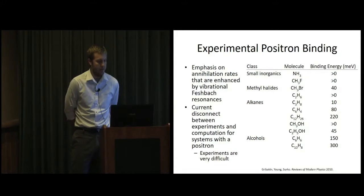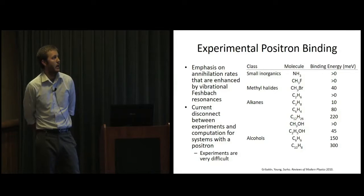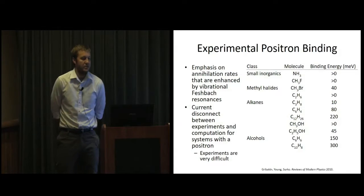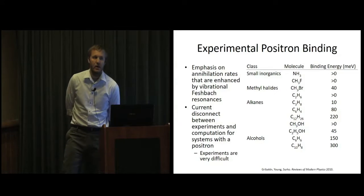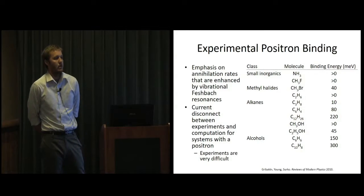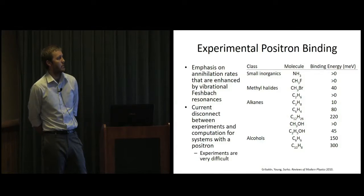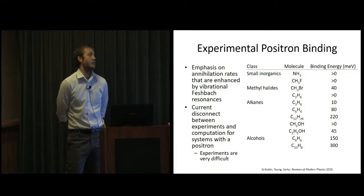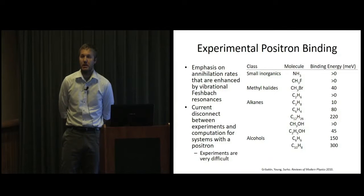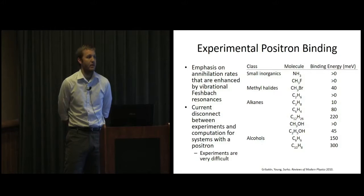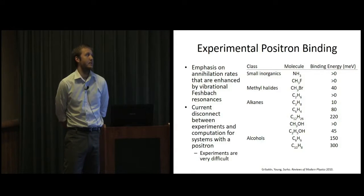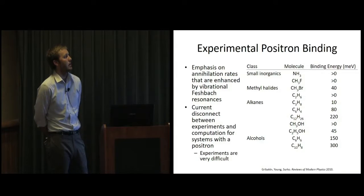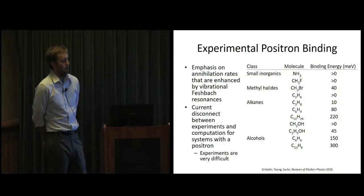As far as experiments, they've looked more at molecular systems, and so they have an emphasis on annihilation rates. These annihilation rates are enhanced by what are called vibrational Feshbach resonances, and these are really hard to compute theoretically, because you have to couple various modes, or various degrees of freedom. Also, experimentally, they tend to look at larger systems, as you can see from the binding energies they have here. With the focus on annihilation rates, the reason they do that is they can measure that directly, and the binding energies are measured indirectly. And so they're kind of harder to compute as well. And so the theoreticians have been computing binding energies. The experimentalists focus a little more on these annihilation rates, and so there's kind of a disconnect between experiments and computation right now. The experiments are very difficult as well.